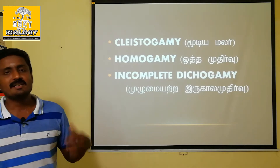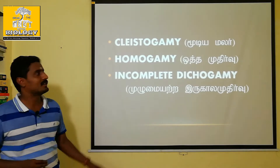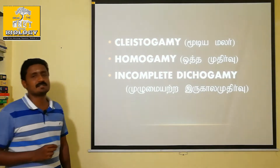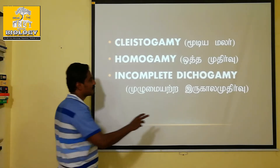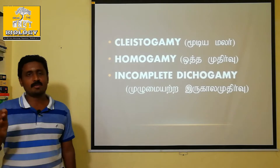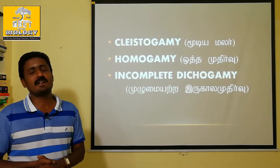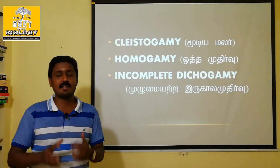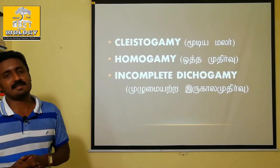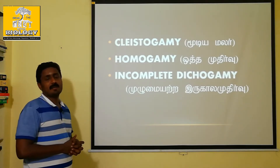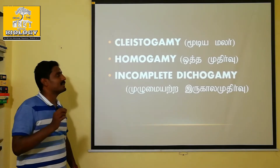The third type is Incomplete Dichogamy. In this, the anther and gynoecium (gynetium) mature at different times, but due to incomplete dichogamy there is some overlap. The anther releases pollen at one time, and the stigma matures at a slightly different time — that overlap is called Incomplete Dichogamy.